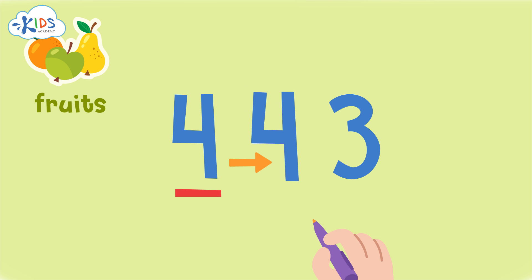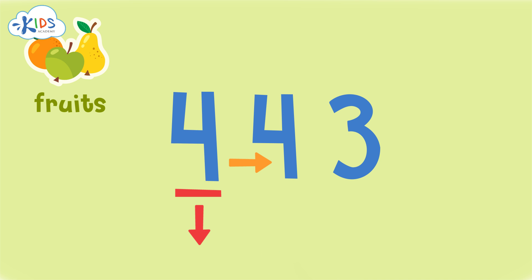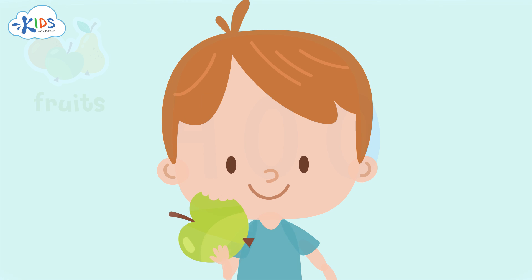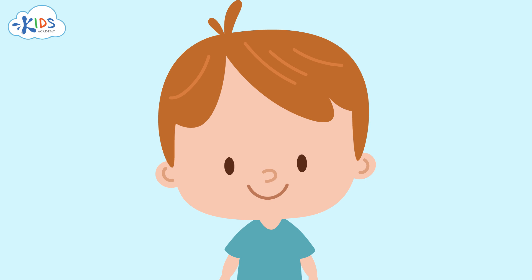I see a four in the tens place. I know if it's four or lower we have to round down. The four in the hundreds place is underlined, so we have to round it down to 400. When rounding to the hundreds place, the numbers in the tens and ones places become zeros. Now I know about 400 pieces of fruit were eaten this week.